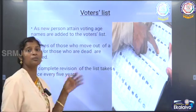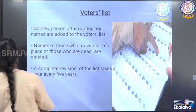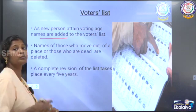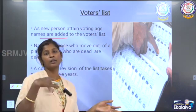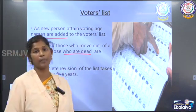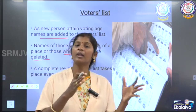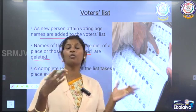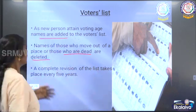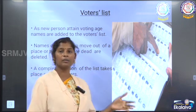Now how is the voters list prepared? New persons who are attaining the age of 18 have their names added to the voters list. Names of those who have moved out of the place or who are dead are deleted from the list. This is how the voters list is revised. The complete revision of the voters list takes place every five years.